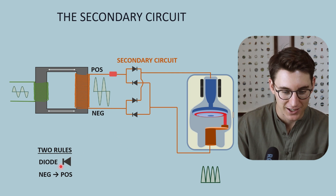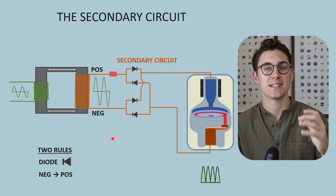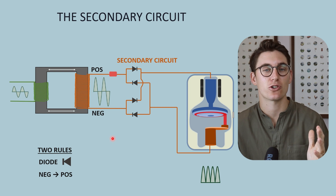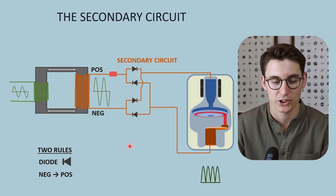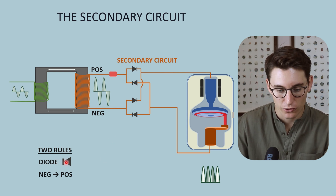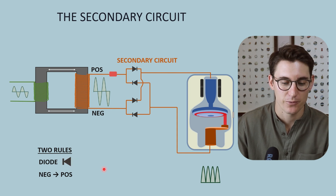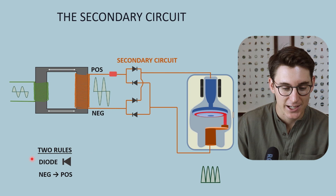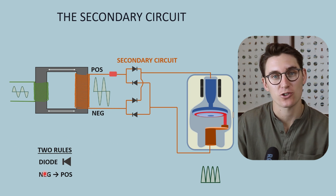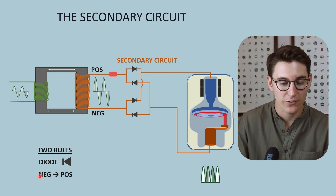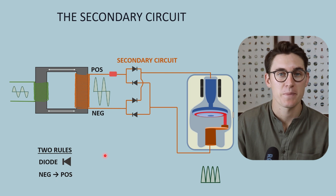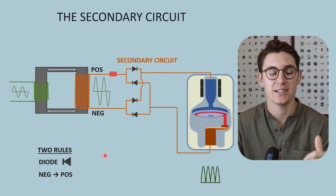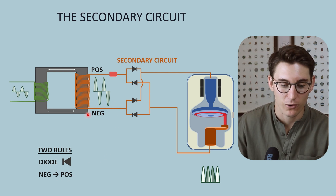The first rule involves a diode. A diode is a semiconductor that only allows electrons to pass through it in one direction — electrons can only pass through a diode in the opposite direction to an arrow. These diodes determine which way current flows through the wires. The second rule is that electrons in a current only flow from negative to positive. Electrons cannot flow to the negative terminal of our coil.